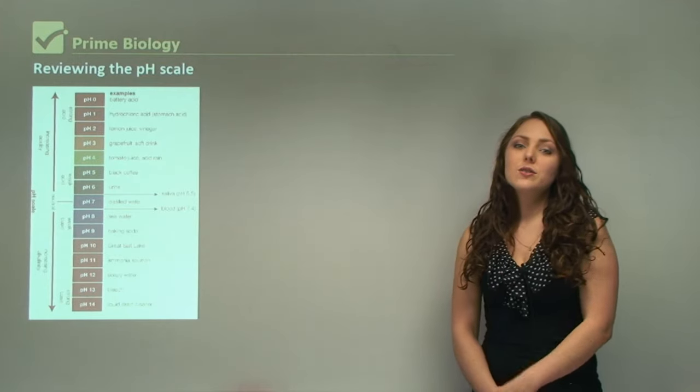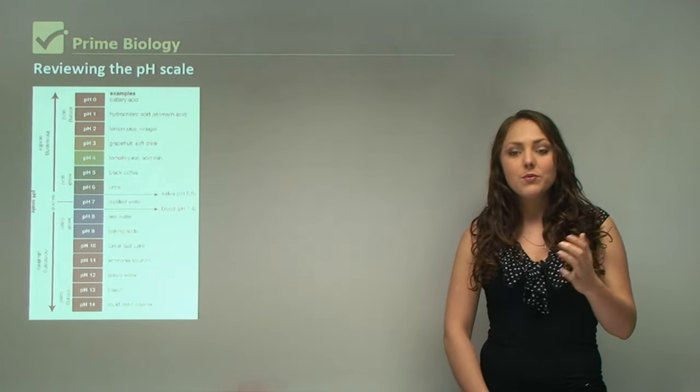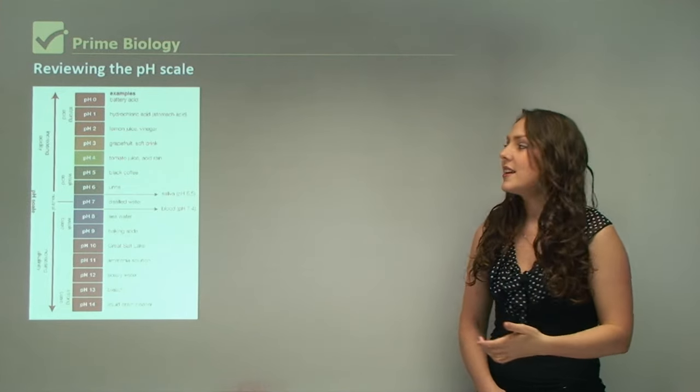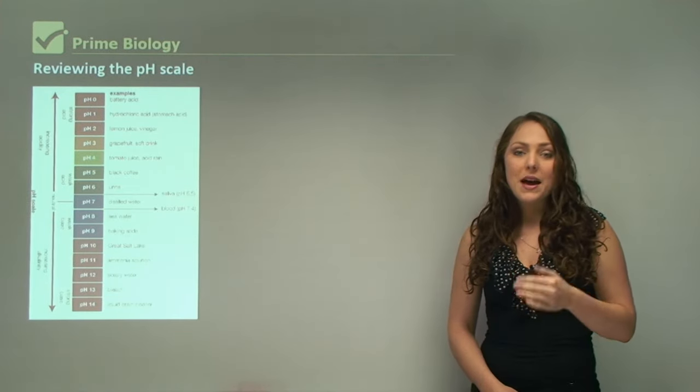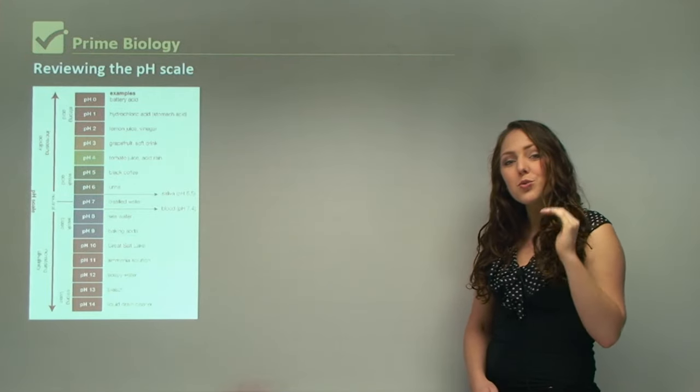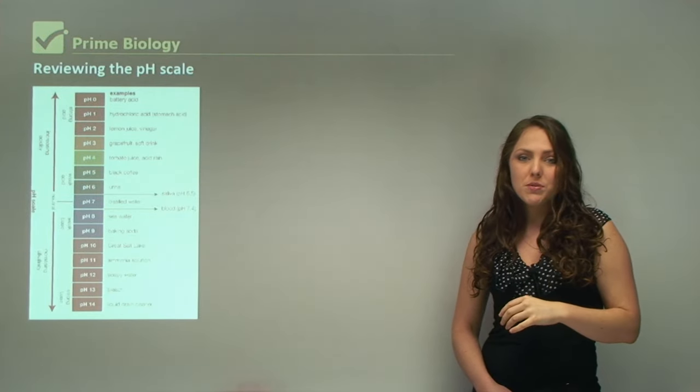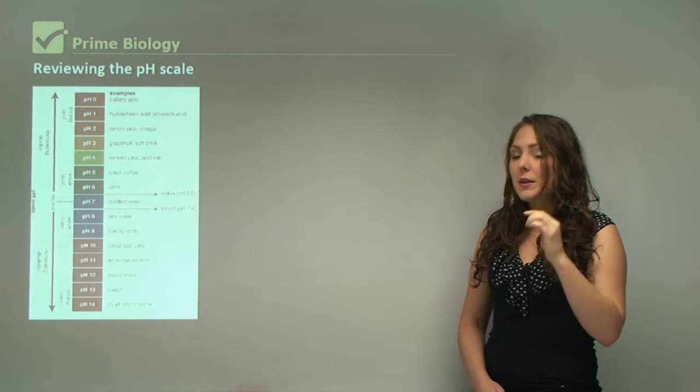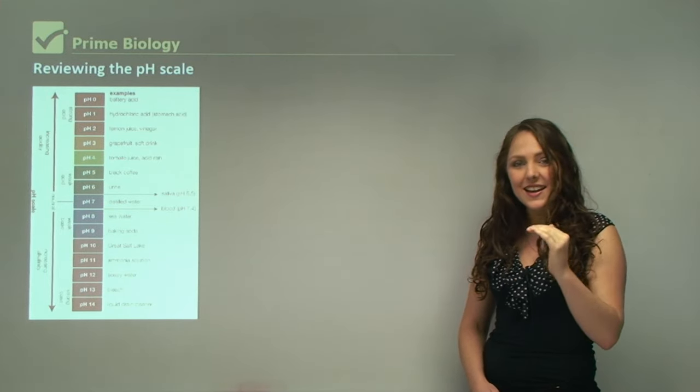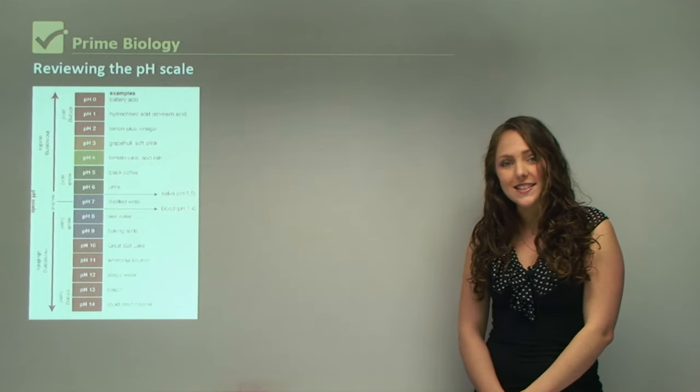Reviewing the pH scale, at pH 0 we know that it's very bad for us. If it went on our skin it would burn us. Examples of this are battery acid. Between each level from 0 to 1, there's actually 10 levels between that. pH is found on a logarithmic scale. We go from battery acid to hydrochloric acid.